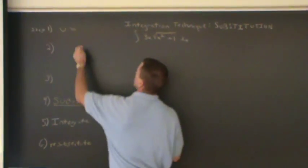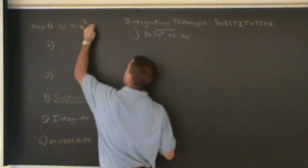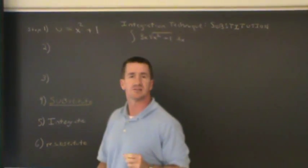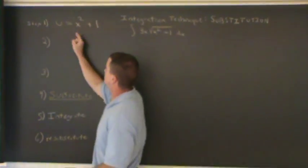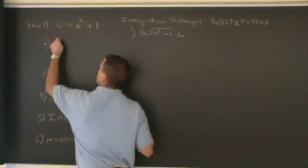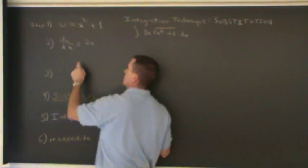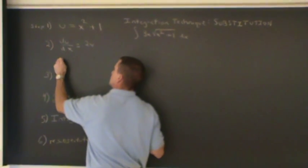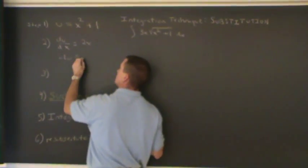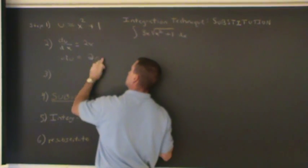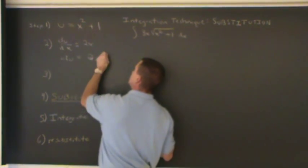So we're going to let u equal x squared plus 1 in our first step. In the second step, we're going to differentiate both sides of this with respect to x. So I get du/dx equals 2x. And I'm going to rewrite this in terms of du. So du equals 2x dx.